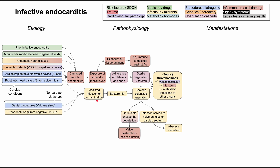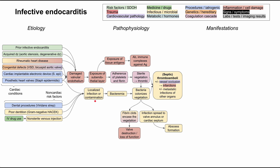For non-cardiac risk factors: dental procedures are associated with viridans strep, causing infection through the gums. Poor dentition predisposes to the HACEK organisms — gram-negative bacteria that can seed a bacteremia through the gums and cause infective endocarditis. Any non-sterile venous injection can cause bacteremia, and the most prevalent cause is IV drug use, where people may use non-sterile needles or liquids, injecting bacteria directly into their veins.